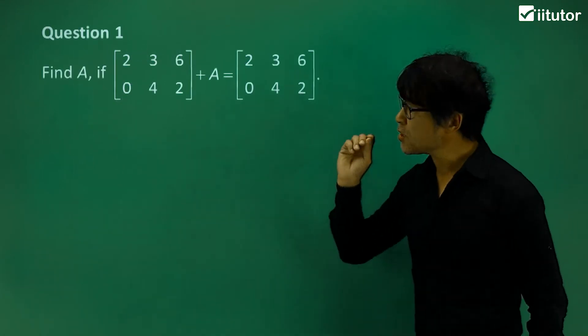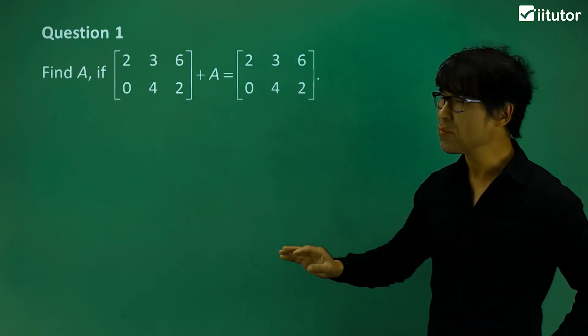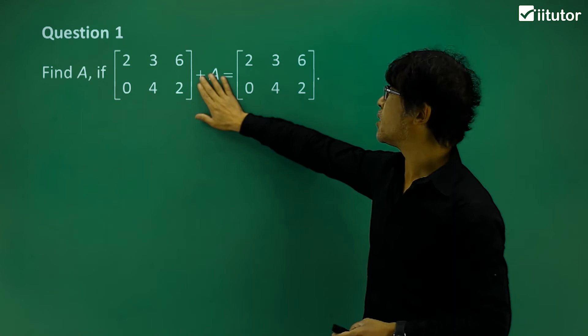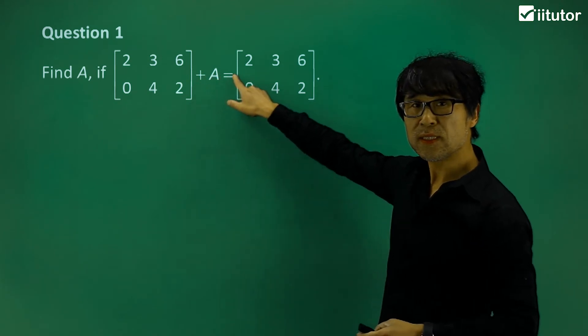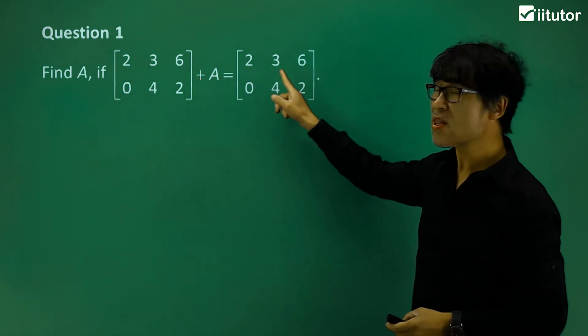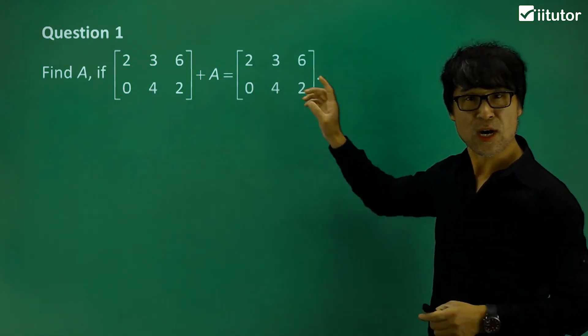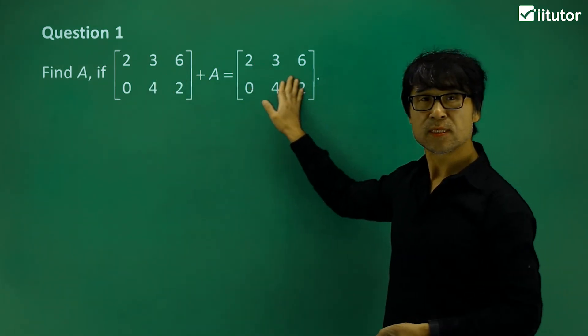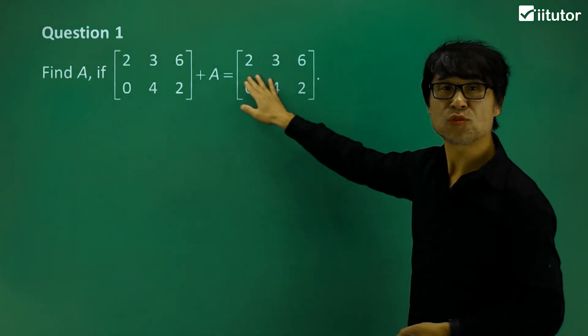So we look at the example over here. It's too simple. See here, this matrix plus another matrix is itself. Can you see that? So these two matrices are equal. Why? Same size. Two by three, two by three, same size.